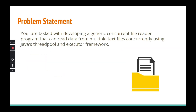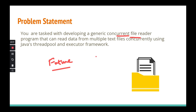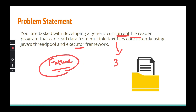The problem statement is to develop a concurrent file reader — the same one from the previous video. In the previous code I didn't use the Future interface, but this time I'm going to use Future and show the updated implementation of the concurrent file reader. We'll have three text files and read from them concurrently using thread pool and executor framework, capturing the result in the Future interface. Future represents the result of the asynchronous computation — in this case, reading data from multiple text files concurrently.